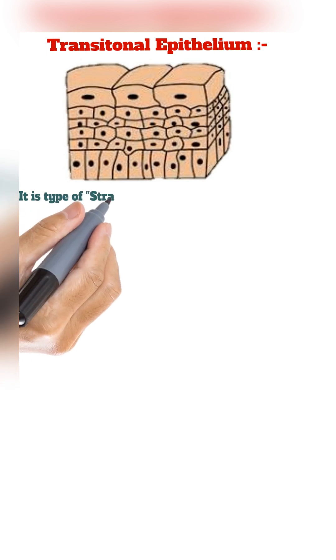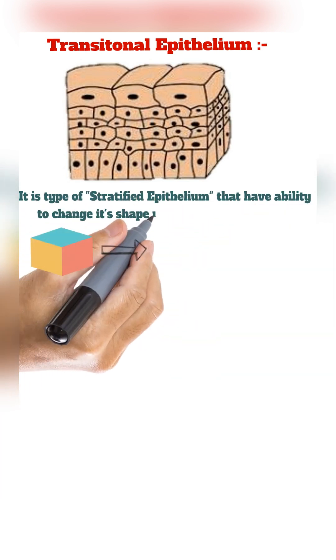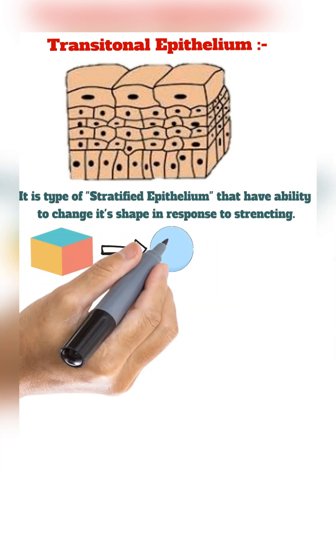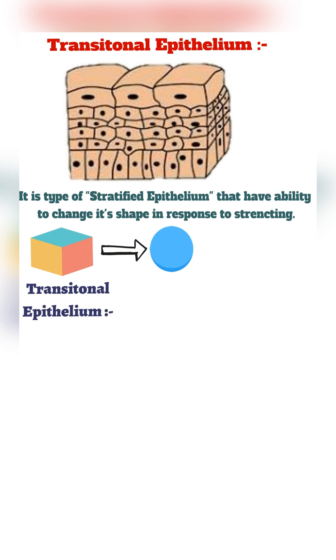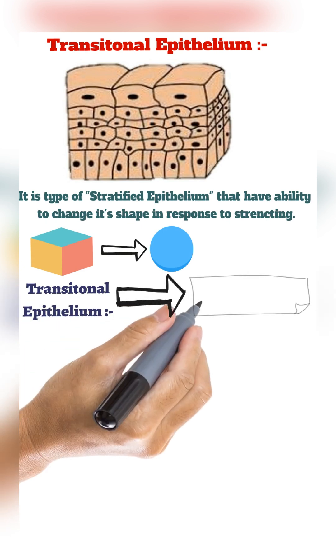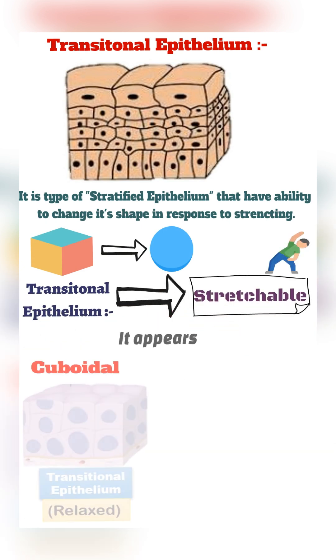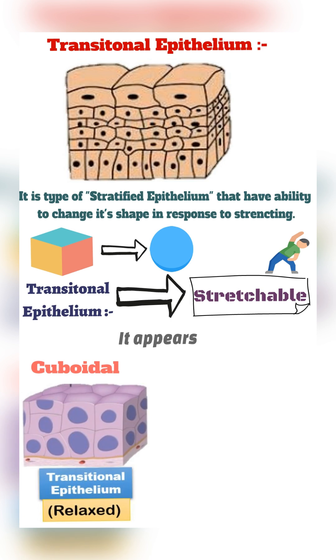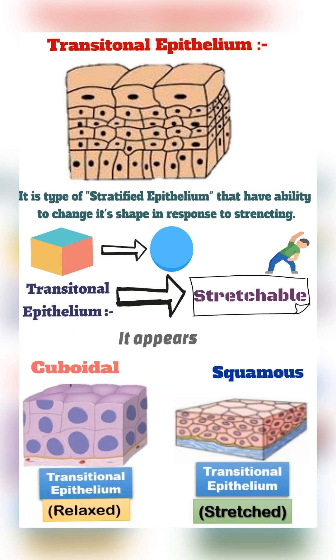It is the type of stratified epithelium that has the ability to change its shape in response to stretching. It is the only type of epithelial tissue that is stretchable. It usually appears cuboidal in shape when relaxed, and squamous in shape when stretched.